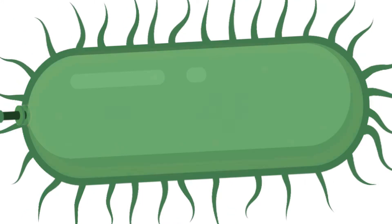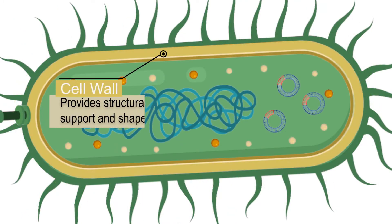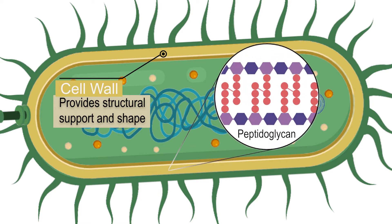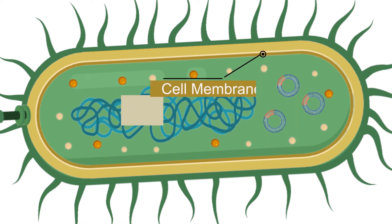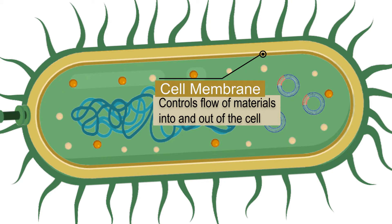A bacterial cell typically contains a cell wall, which is a thick and rigid outermost protective covering composed of a polysaccharide called peptidoglycan. It also contains a cell membrane, which is a thin, flexible, and semi-permeable layer that primarily regulates the movement of materials into and out of the cell.